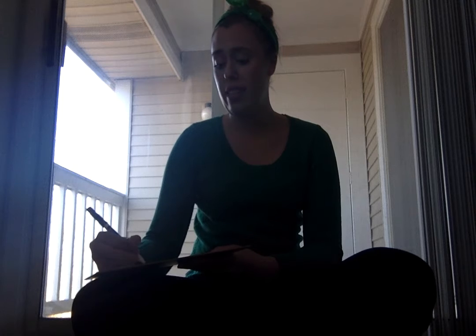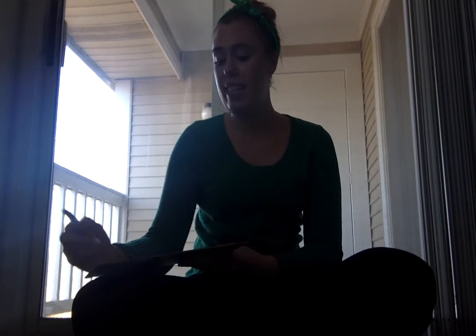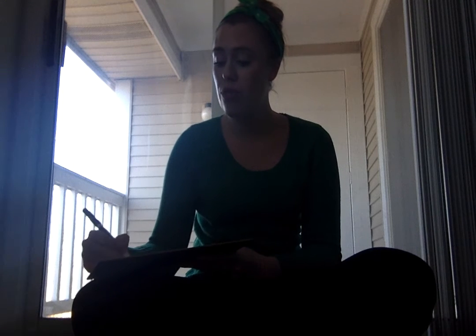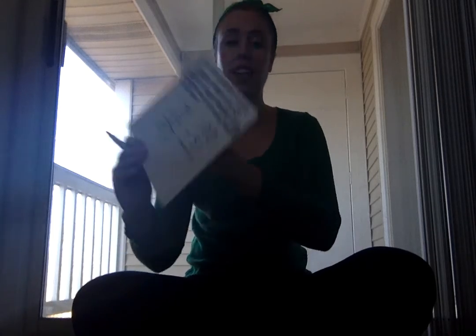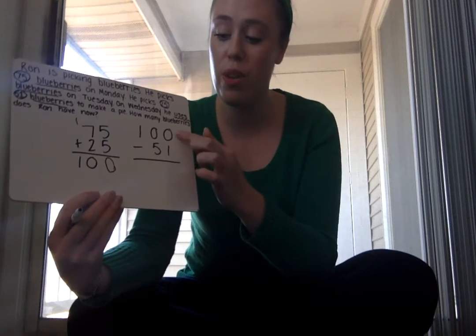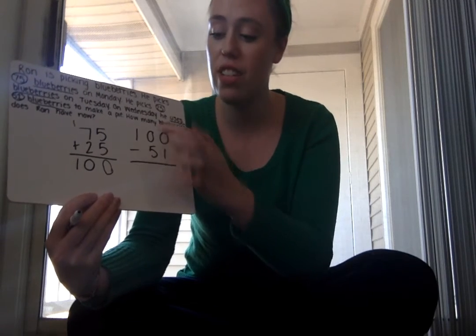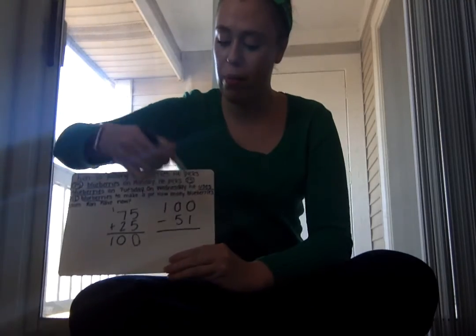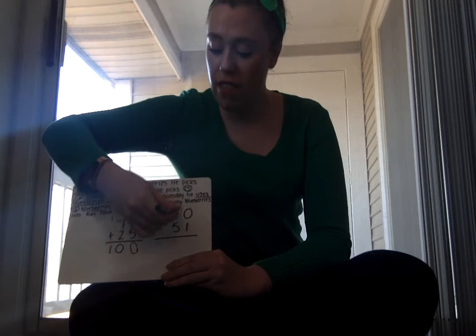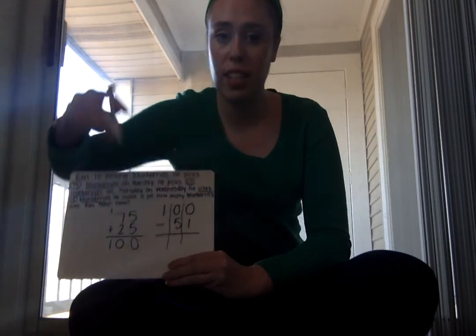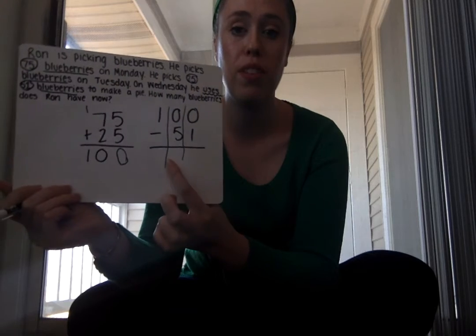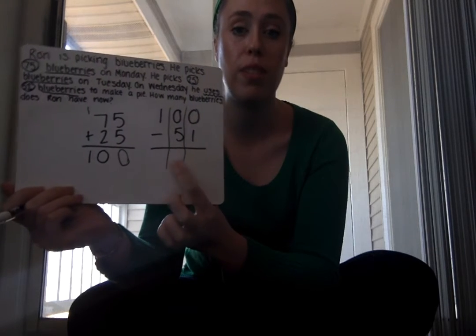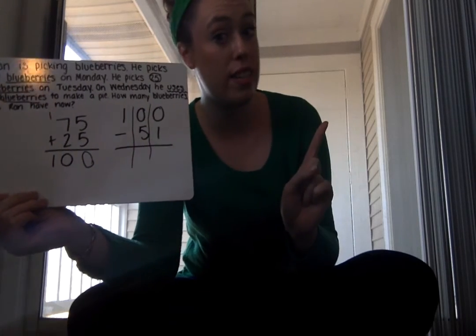Now I need to take those 100 blueberries and subtract out 51. The most important part of setting up this equation is that ones are on top of ones, tens on top of tens, and hundreds on top of hundreds. You can draw lines going down to separate your place values if that helps keep things straight — because this gets tricky. We still start with our ones column: zero minus one.